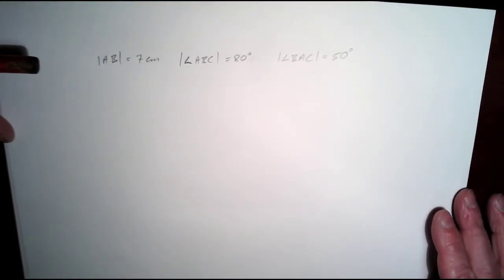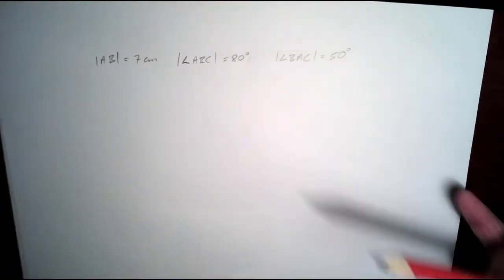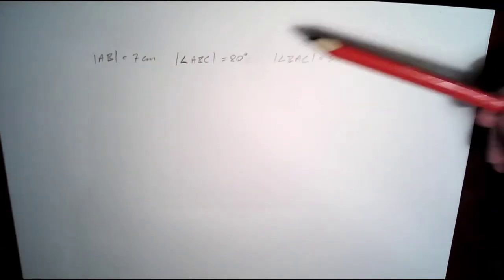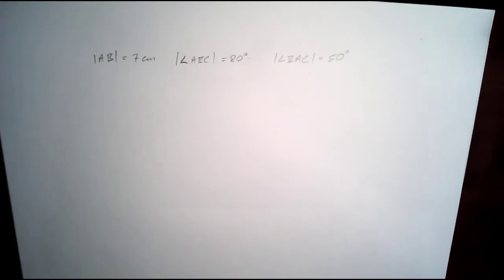Okay, so let's have a look at drawing this triangle here where we've got AB is equal to 7 cm, the angle ABC is 80 degrees, and the angle BAC is 50 degrees.